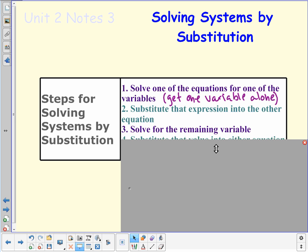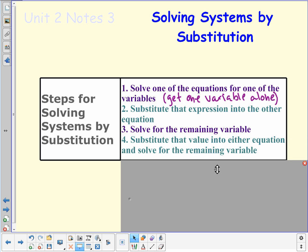And then after that, we will only have one variable in that equation and we solve for the one that's left. That's going to give us our first solution, or first half of the solution, I should say. And then the last thing that we do is substitute that value into either equation and solve for the other variable.